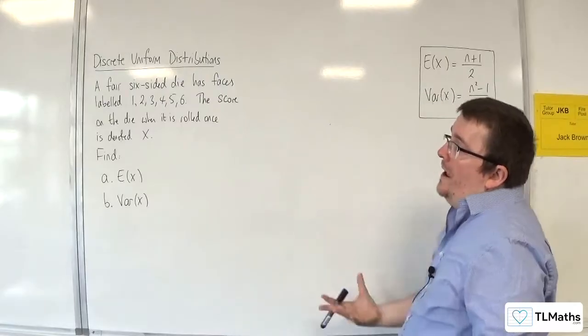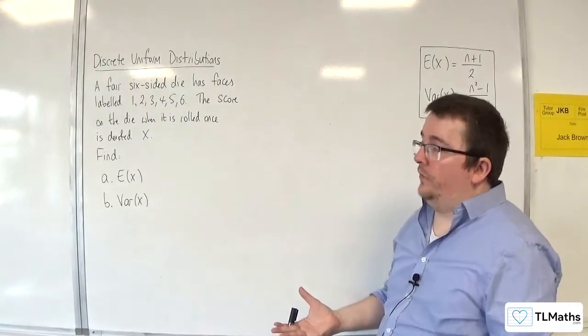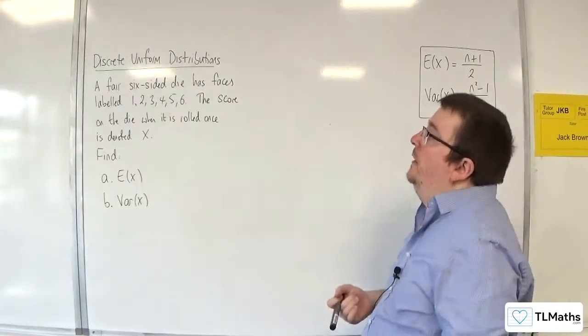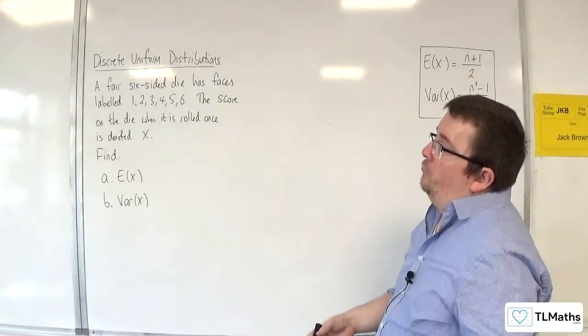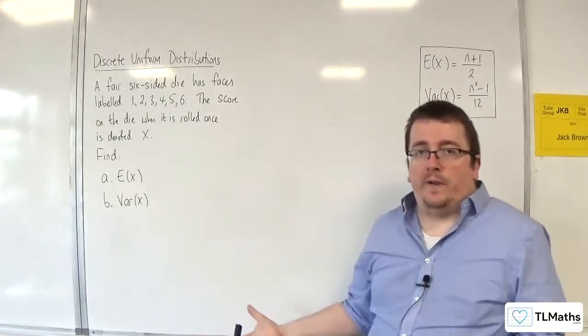In this video, we have a fair six-sided die with faces labelled 1, 2, 3, 4, 5, 6, so just an ordinary die. The score on the die, when it is rolled once, is denoted X. Find E of X and Var of X.